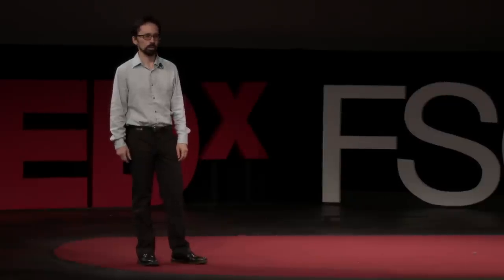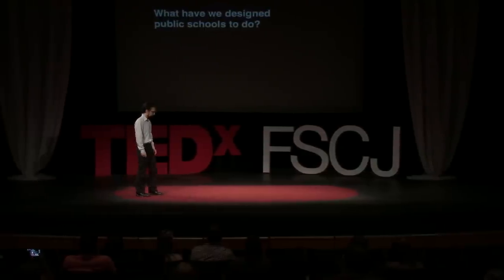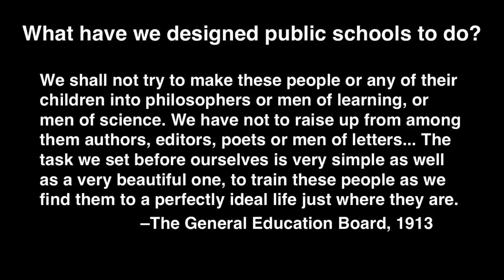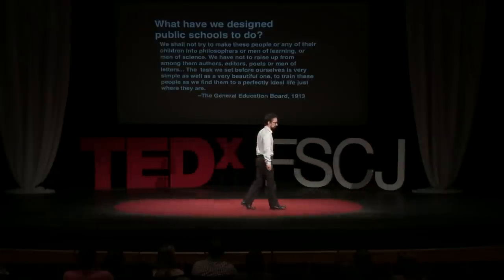That the only things that actually matter are the things that are going to help them better the economy. So what reason do they have to work hard on anything if the things that they love don't matter? And when you really start to think about it, the educational system is doing exactly what it was designed to do. We can criticize it all we want, but it's doing exactly what it was built to do. When compulsory education in the United States was being developed, it was not developed to create whole people. So when we are upset that they're not coming out happy, flourishing agents who have a strong understanding of the world around them, it's because it was meant to do exactly this. To quote the General Education Board 1913, we shall not try to make these people or any of their children into philosophers or men of learning or men of science. We have not to raise them up from among them authors, editors, poets, or men of letters. The task we set before ourselves is very simple as well as a very beautiful one: To train these people as we find them to a perfectly ideal life just where they are.